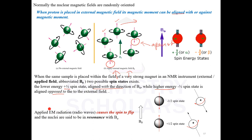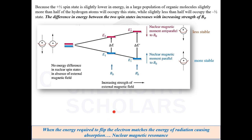When you apply electromagnetic radiation in the form of radio waves, they cause the spin of the nuclei to flip, and then the nuclei are said to be in resonance. Initially when the external field was absent, there was no difference in the energies of the spins. When you apply the magnetic field, two spin states exist: plus 1/2 which has lower energy and is more stable, and minus 1/2 which has more energy and is less stable.